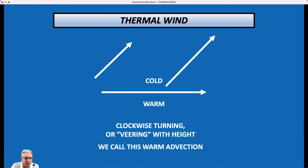It had to turn 45 degrees clockwise. So we call that clockwise turning veering with height, and that is associated with warm advection. And again, you can see the way those arrows are oriented is that it's allowing cold air to retreat and warm air to come in and replace it.